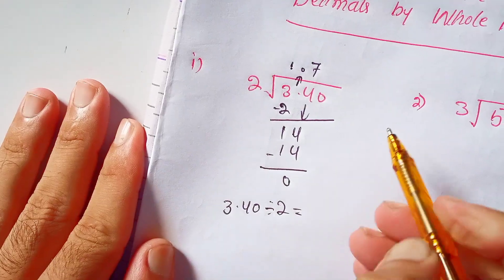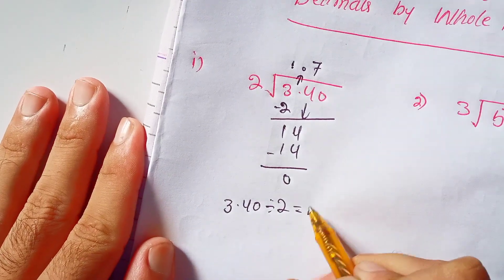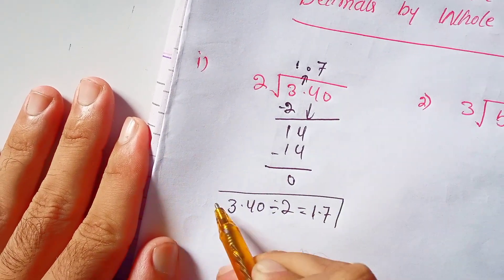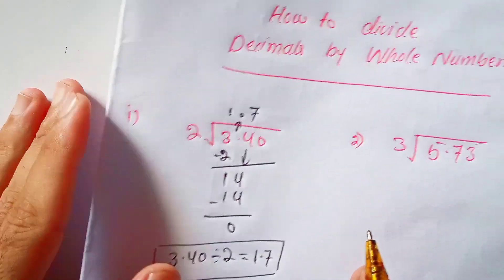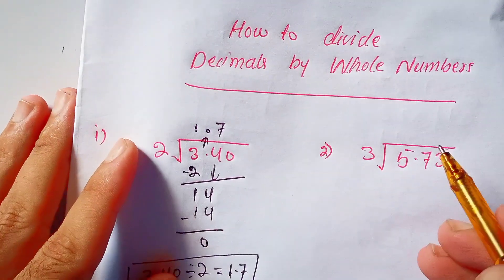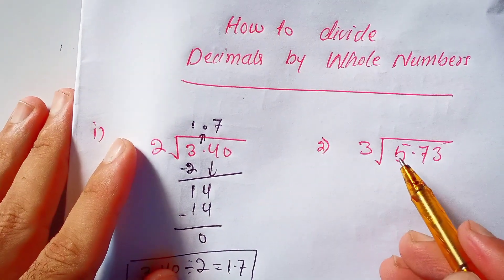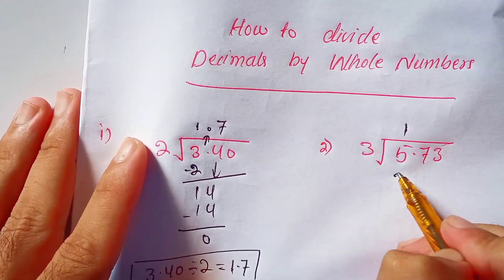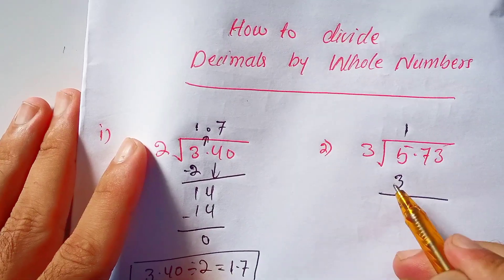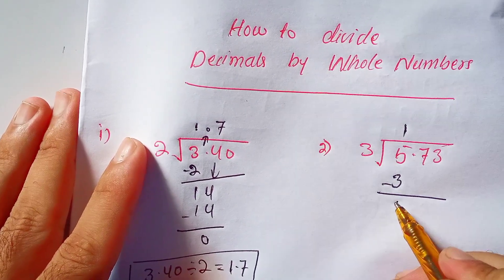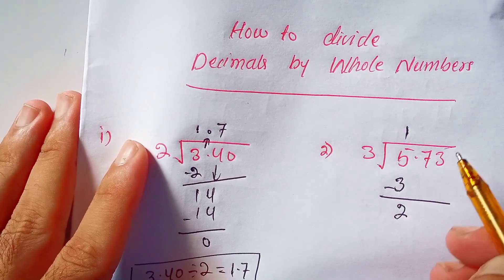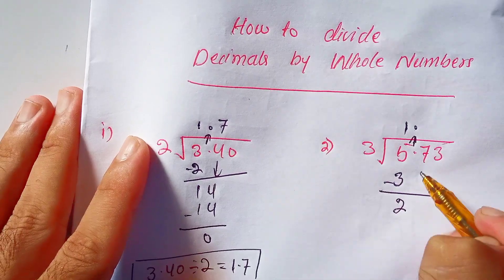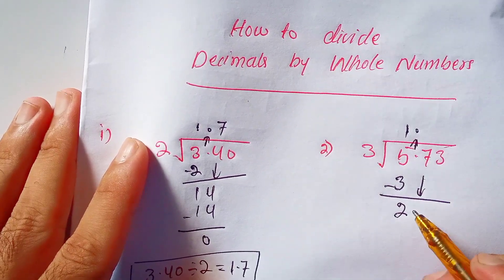Now here is another example: 5.73 divided by 3. 3 times 1 is 3. Subtract 3 from 5, the remainder is 2. Carry the decimal point to the quotient and bring down the 7 near 2 to make it 27.